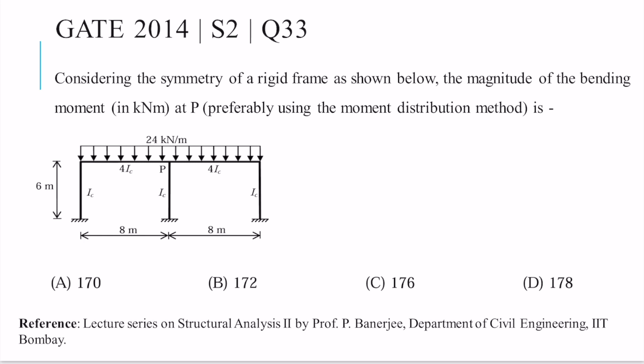Hello everyone. Today I'll be presenting question number 33 of GATE 2014 Set 2. Considering the symmetry of a rigid frame as shown, the magnitude of bending moment in kilonewton-meter at P, preferably using the moment distribution method, is to be found. We are given this symmetric frame with symmetric loading. Four options are given and we need to find the value of bending moment at P.